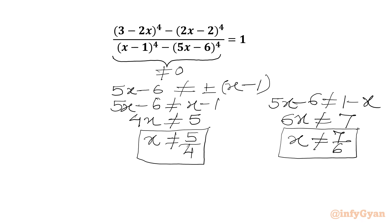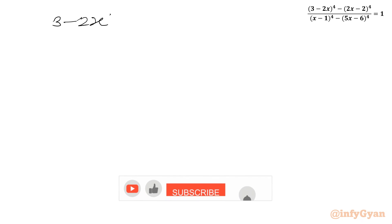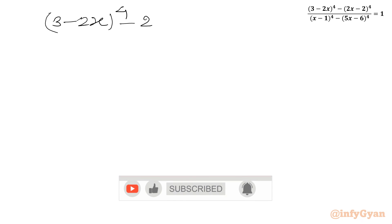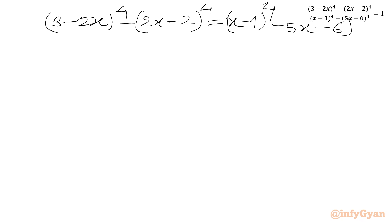Now I will cross multiply. So I will write (3 minus 2x)^4 minus (2x minus 2)^4 equal to (x minus 1)^4 minus (5x minus 6)^4.